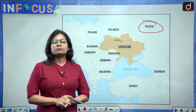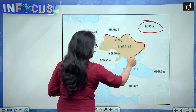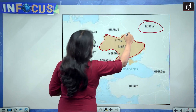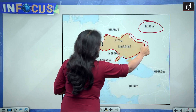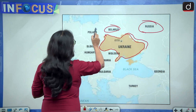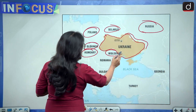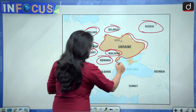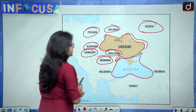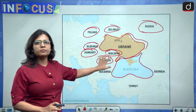But see, this is Ukraine, and Ukraine shares its borders with many countries, including a large border with Russia. The bordering countries of Ukraine are Russia, Belarus, Poland, Slovakia, Hungary, Moldova, Romania, and it also shares its border with the Black Sea. This is the location of Ukraine on the world map and these are the bordering countries of Ukraine.